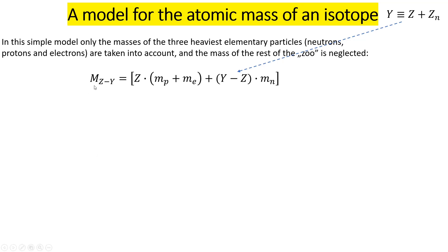I am making a model for the atomic mass of isotope Y of element Z. For that I take into account the masses of protons, electrons, and neutrons as discussed in the previous lecture. I will neglect all the masses of the rest of the elementary particles — the zoo of elementary particles is neglected in the first approximation. So I take the mass of a proton plus mass of an electron, multiplied by the atomic number Z — which equals the number of protons and electrons in the neutral atom.